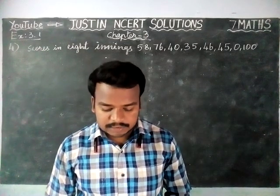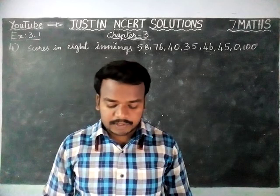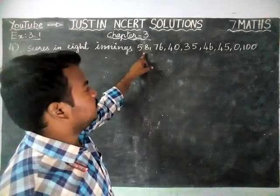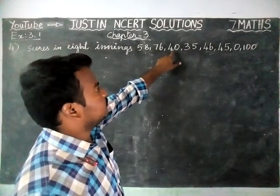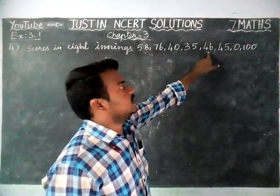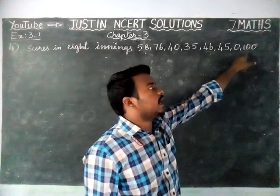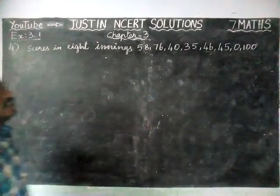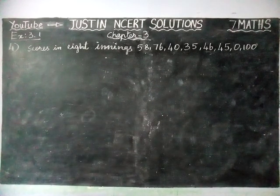The question is: a cricketer scores the following runs in 8 innings — 58, 76, 40, 35, 46, 45, 0, and 100. We have to find the mean score of those 8 innings.